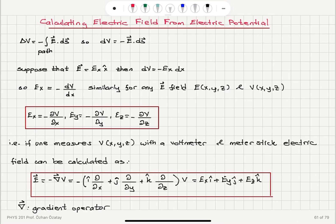To summarize, we can calculate electric field from electric potential. So we need to know the spatial variance of the electric potential. If we are using Cartesian coordinates, the electric field is minus gradient of the potential.